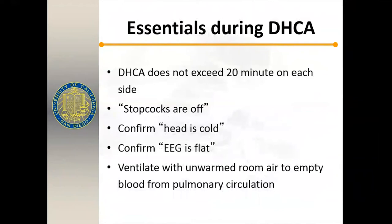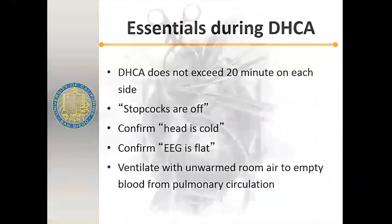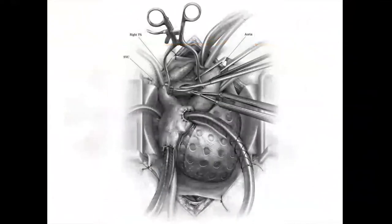Remember to turn the stopcocks off when draining the patient to avoid entraining air. Confirm the head is cold and EEG is flat. Ventilate and squeeze blood out of the lungs prior to the surgeon starting the endarterectomy. Cannulation: high ascending aorta cannulation, bicaval cannulas with one up into the SVC and one down into the IVC. We use a cooling jacket around the heart and a modified cerebellar retractor to open the space between the aorta and SVC to approach the right pulmonary artery.